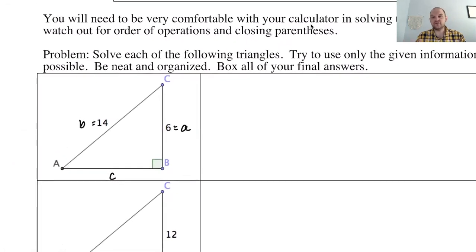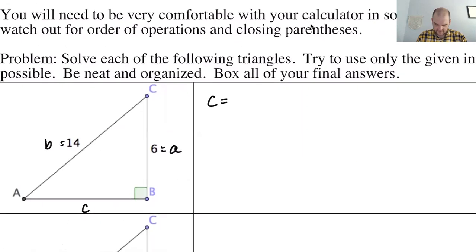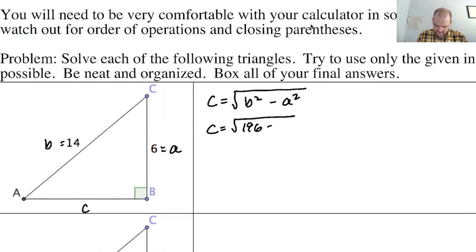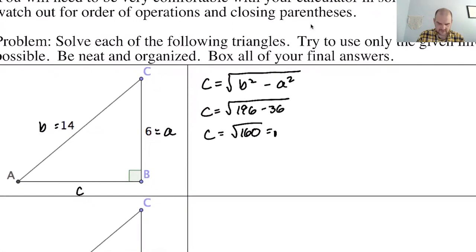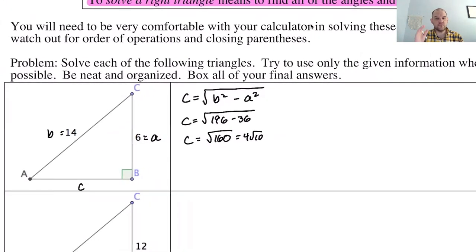I'm going to find side c first because I know two sides of a right triangle, which means I use the Pythagorean theorem. So c equals the square root of b squared minus a squared, which in this case means c equals the square root of 196 minus 36, so c equals the square root of 160. Since 160 is 16 times 10, you could simplify to 4 root 10, but either form is fine.